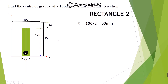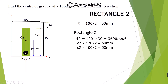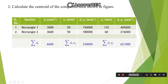For the second rectangle, we remove the first rectangle. The dimension is 120 by 30. a2 = 120 × 30. x2 is the distance of the CG of the second rectangle from the Y-axis, and y2 is the distance from the X-axis. The centroid is exactly at the center of the rectangle — at a distance of 120/2 from the X-axis and 50 from the Y-axis. So a2 = 120 × 30, y2 = 120/2 = 60 mm, and x2 = 100/2 = 50 mm.